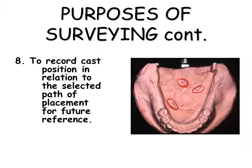The path of insertion is recorded by a method of tripodding. Scoring the cast in discrete areas allows duplication of the cast and orientation of the duplicate cast in the established path of insertion. This facilitates simulated tooth preparation, manufacture of a temporary partial, placement of block-out material, or other diagnostic procedures.